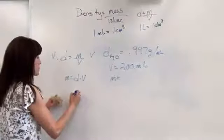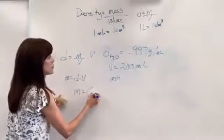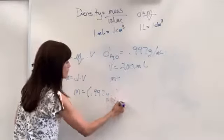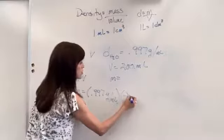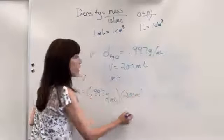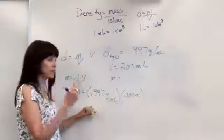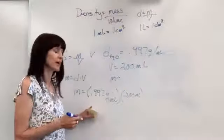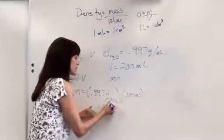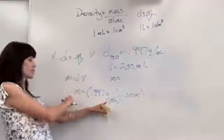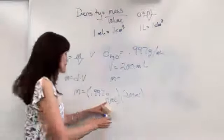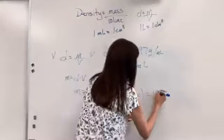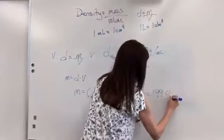So mass equals 0.997 grams per mL times 200 mLs. Always always include your units in your math because the units will confirm you've done your math correctly. mLs cancel and we're left with grams which is a unit for mass. Perfect. Multiply that and we are going to get 199.4 grams.